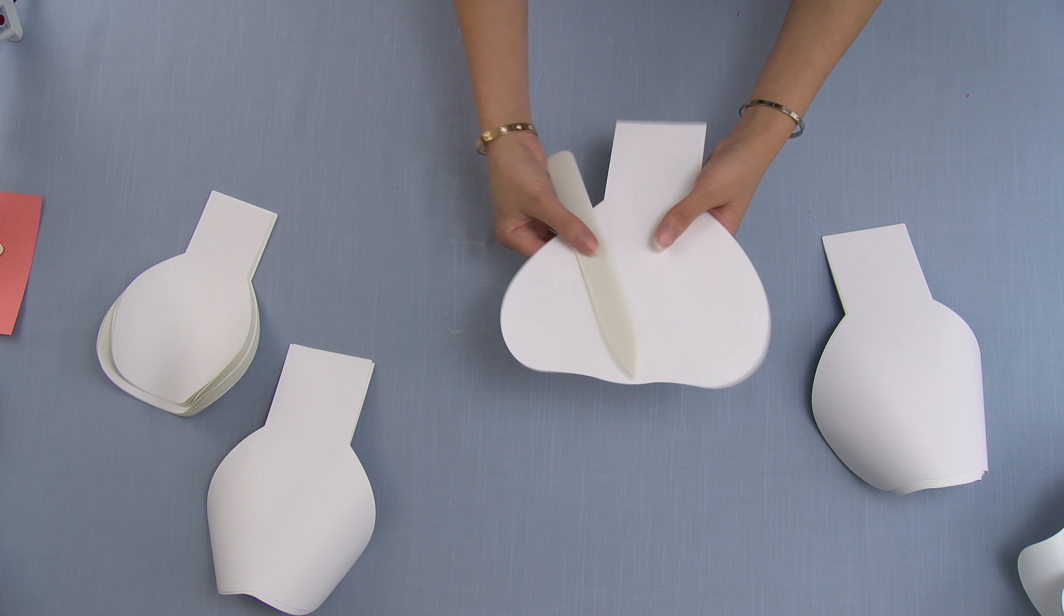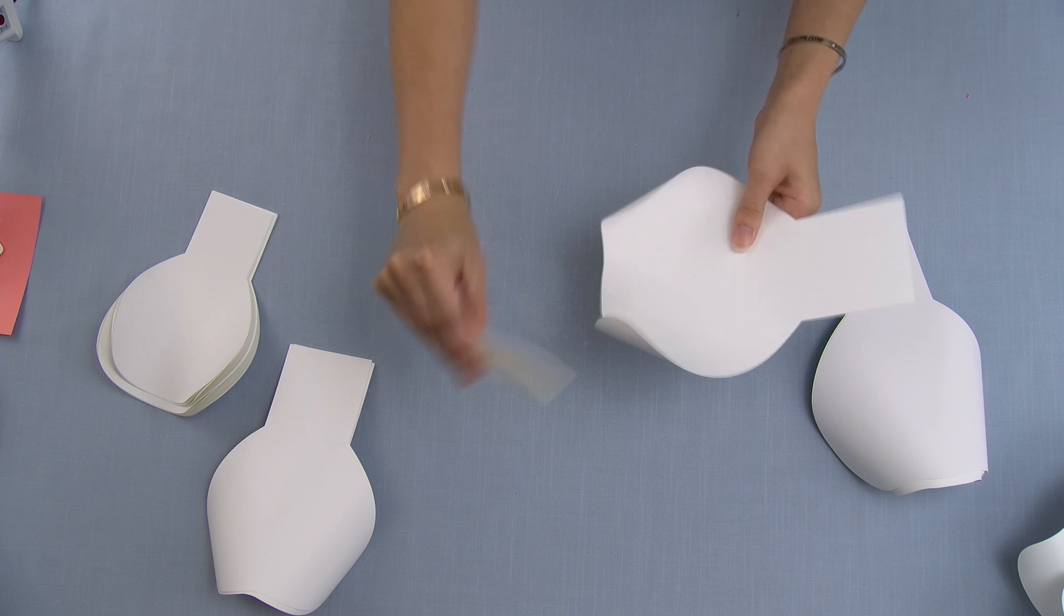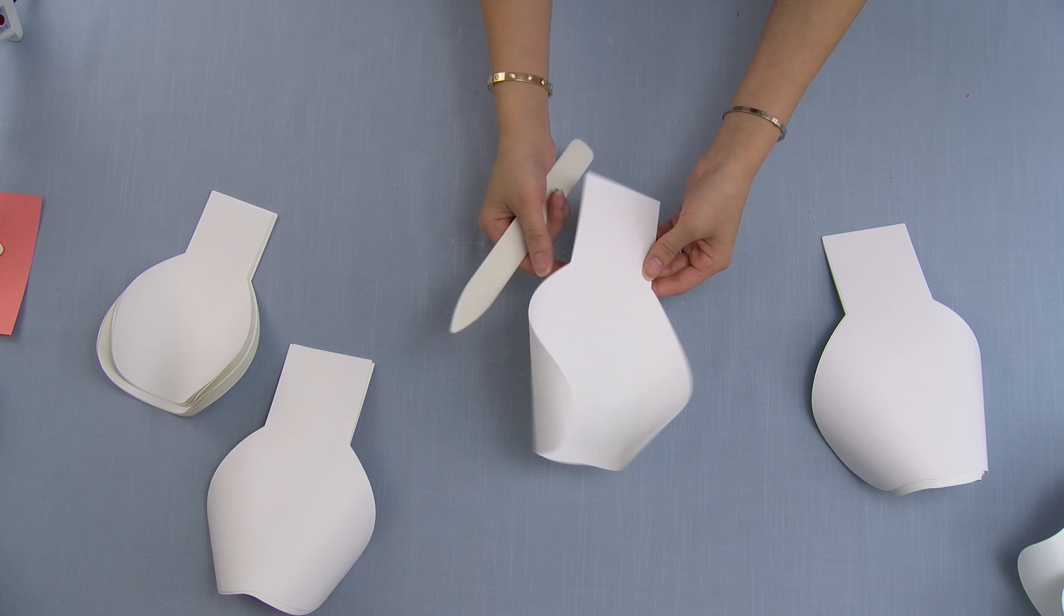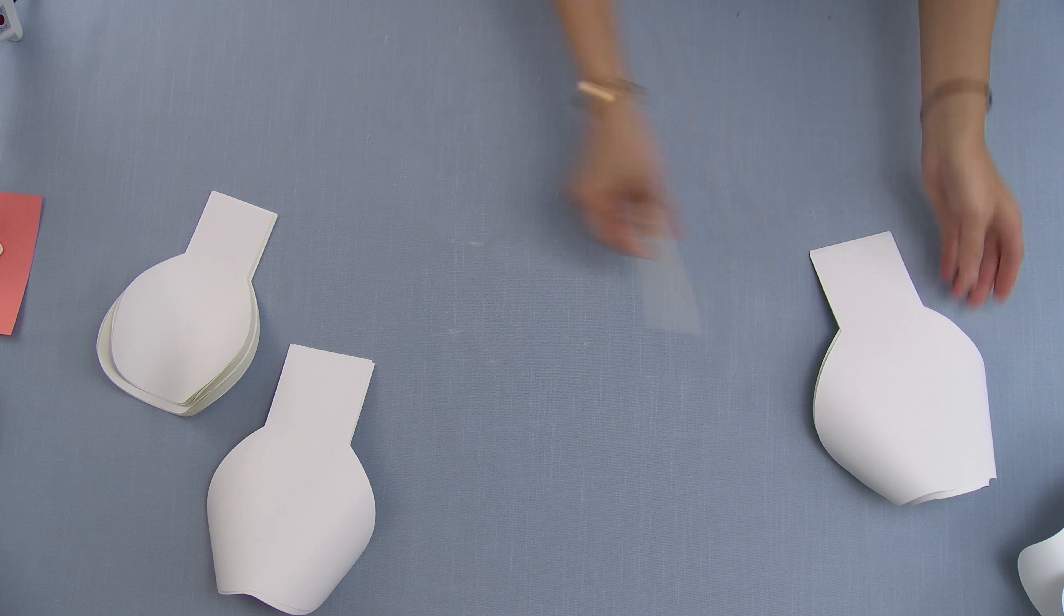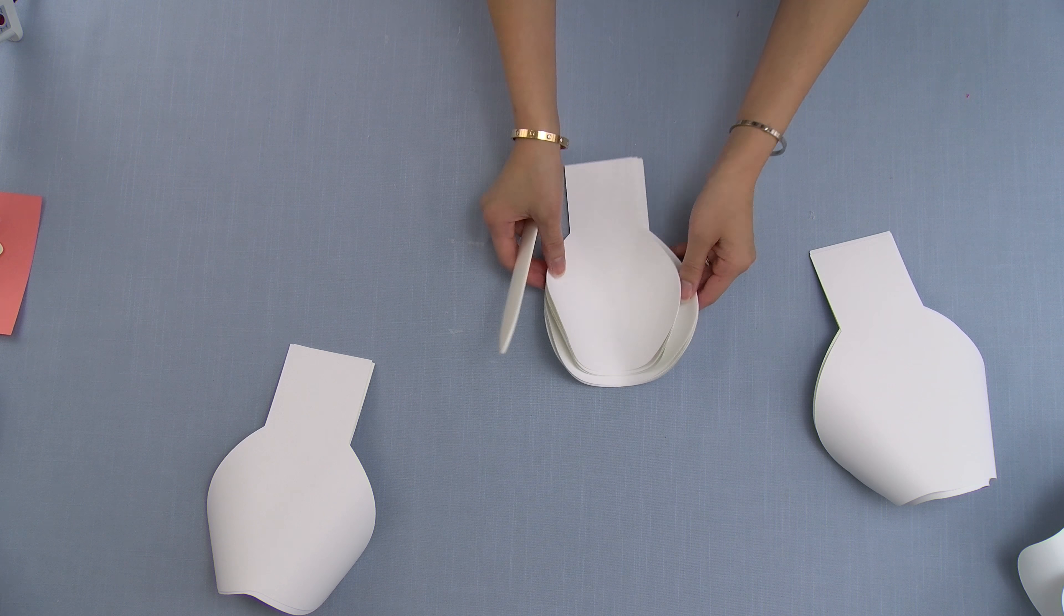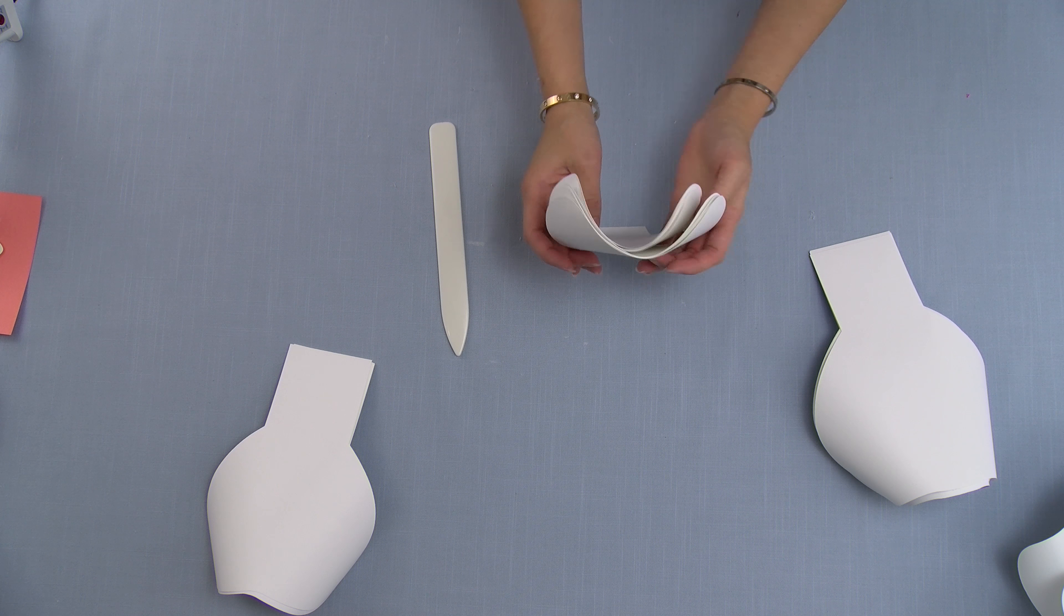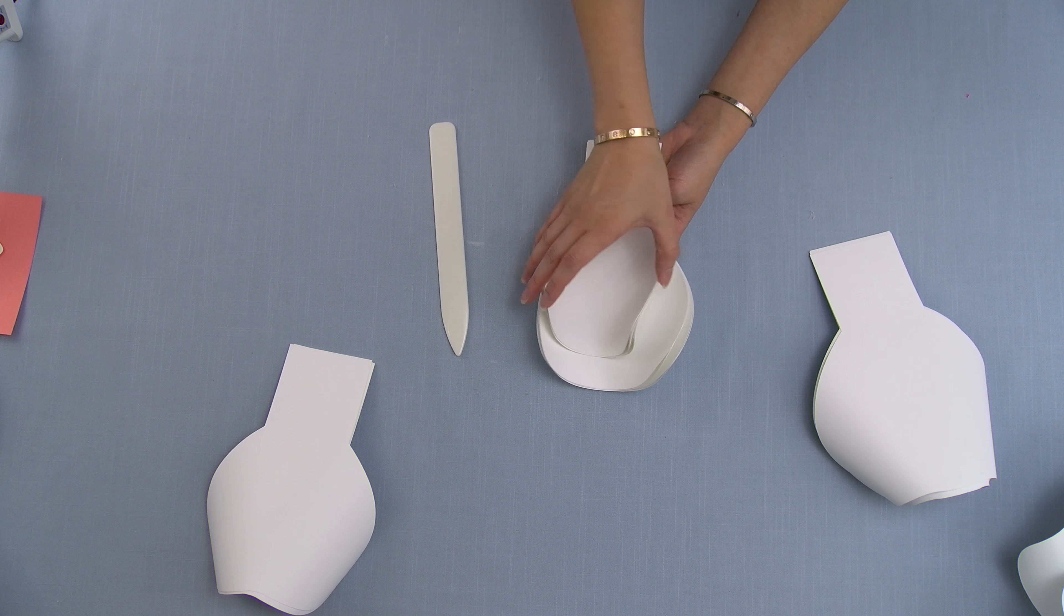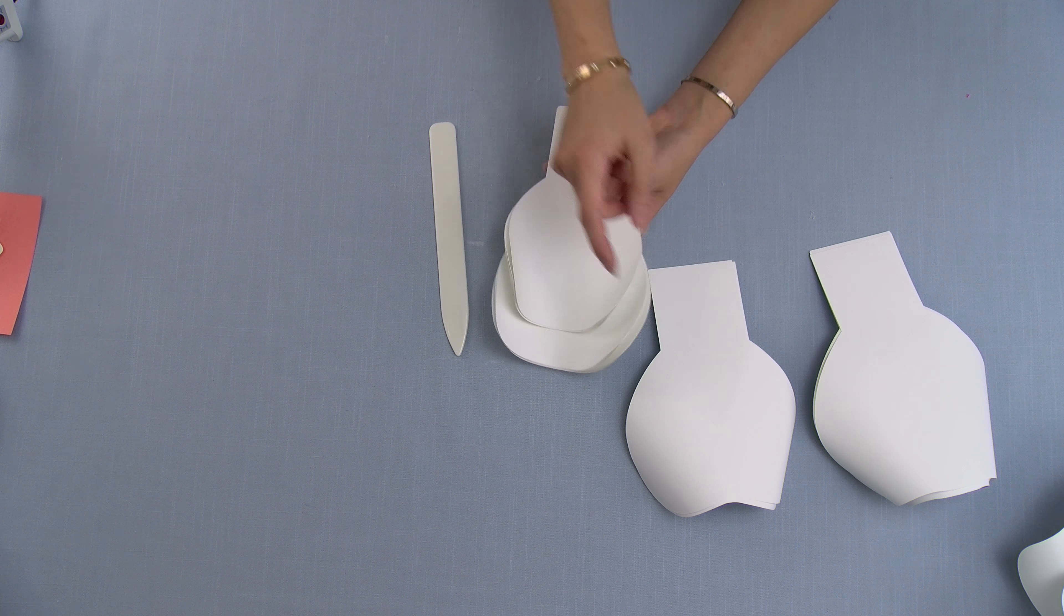Same thing with this, I'm just going to curl the sides and then I'm going to flip it over again. So you're just going to do that for all the petals. The center pieces, the eight center pieces, you want to leave the fold upwards, and the heart and wavy-shaped petal you want the folds to be downwards.